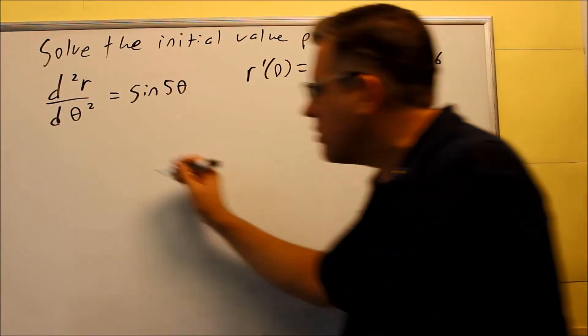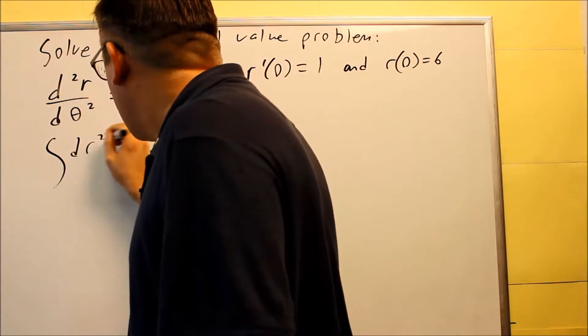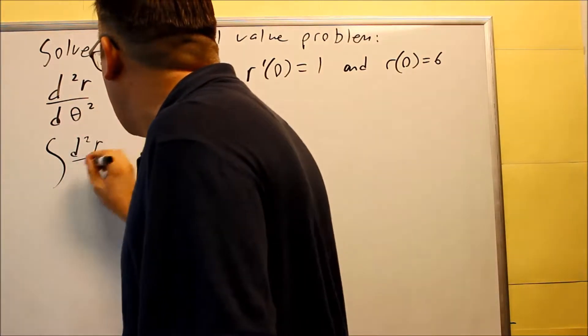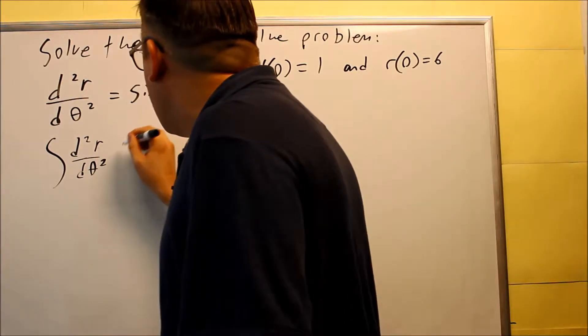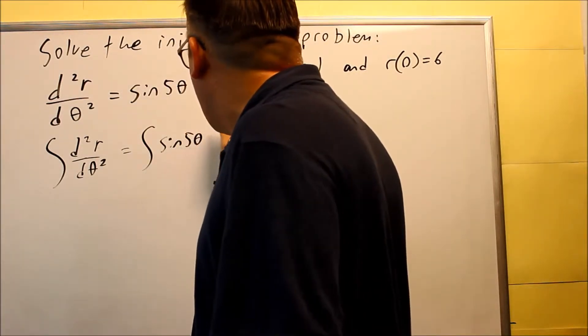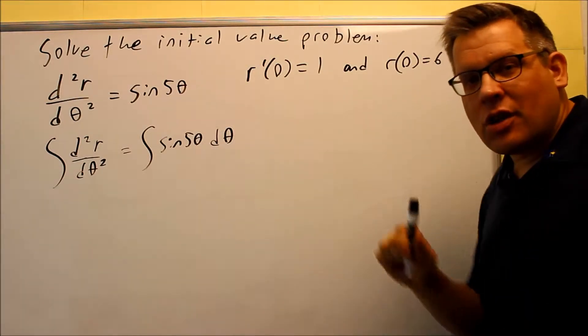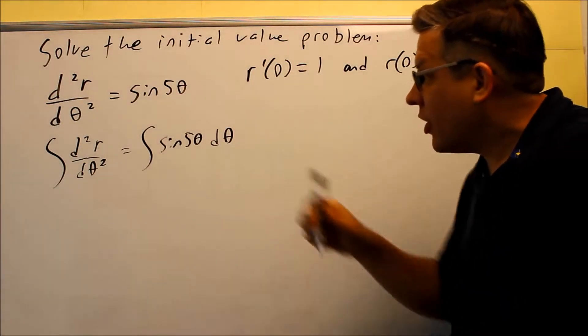We're going to take the anti-derivative of both sides. d²r/dθ², I should say, over dθ squared. And then we're going to do the anti-derivative of this one. Don't forget to put dθ here this time because it's got to match the variable that you have there.